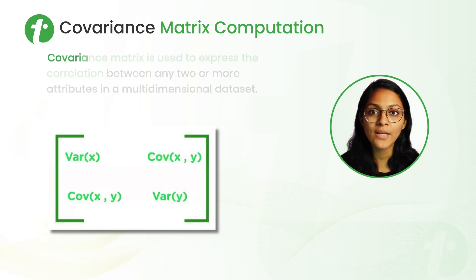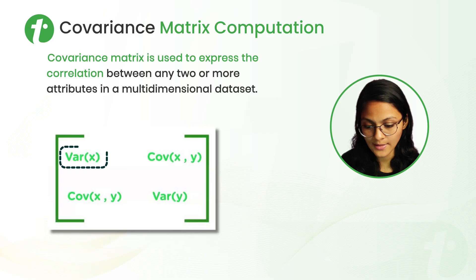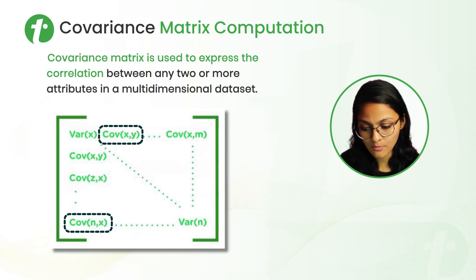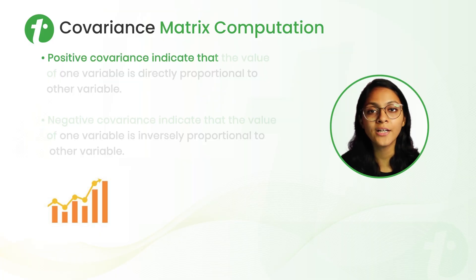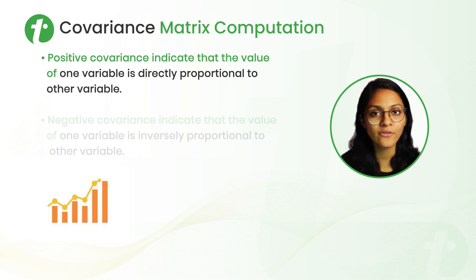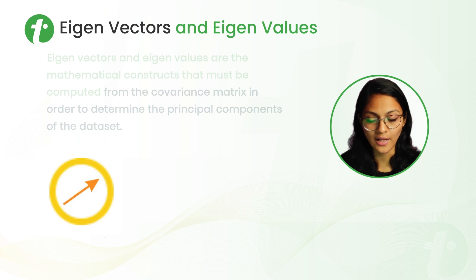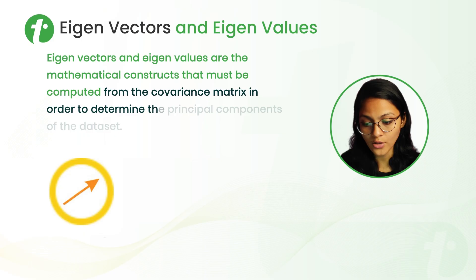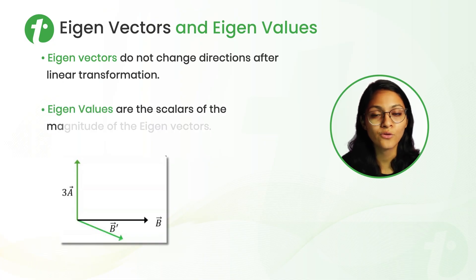The second step is Covariance Matrix Computation. The covariance matrix is used to express the correlation between two or more attributes. VAR represents variance and COV represents covariance. N is the number of entries and M is the number of variables in the multi-dimensional dataset. A positive covariance value indicates one variable is directly proportional to another. The third step is Eigen Vectors and Eigen Values: mathematical constructions computed from the covariance matrix to determine the principal components. Eigen Vectors do not change their direction after linear transformation, and Eigen Values are the scalar magnitudes of the Eigen Vectors.